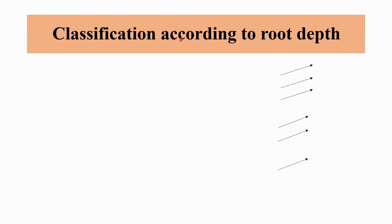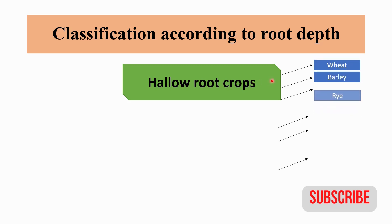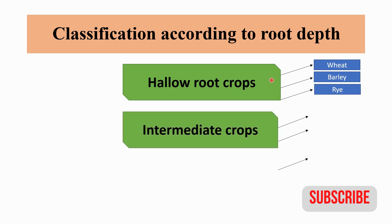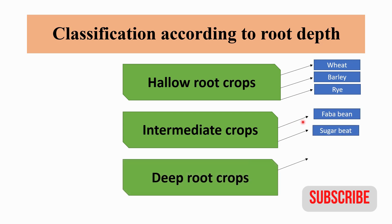Classification according to root depth: first is shallow root crops, where the root system depth is up to one meter — examples include wheat, barley, and rye. Second is intermediate crops, where the root system depth ranges from 1 to 1.5 meters — examples include faba bean and sugar beet. Third is deep root crops, where the root system depth is more than 1.5 meters — an example is alfalfa.